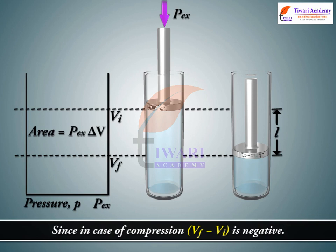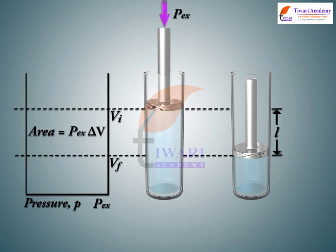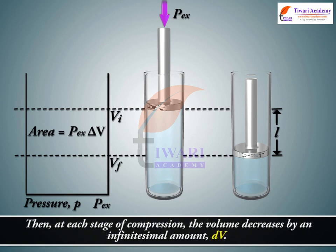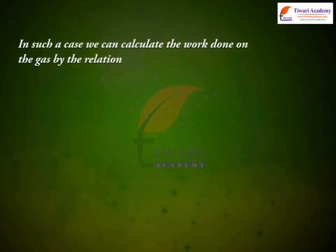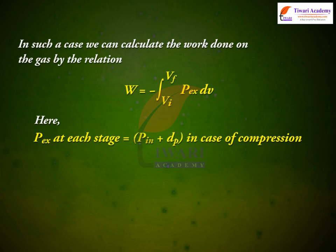Since in the case of compression, Vf − Vi is negative, the sign obtained for the work will be positive. If the pressure is not constant but changes during the process such that it is always infinitesimally greater than the pressure of the gas, then at each stage of compression the volume decreases by an infinitesimal amount dV. In such a case, we can calculate the work done on the gas by the relation W = −∫(Vi to Vf) Px dV. Here, Px at each stage equals Pin + dP in case of compression, or Pin − dP in case of expansion.